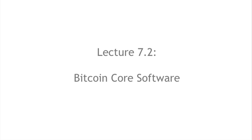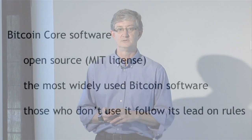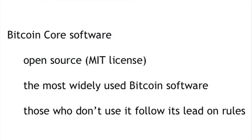In section 7.2, we'll talk about the Bitcoin core software. This is a piece of open source software, which is a focal point for discussion and debate about Bitcoin's rules. It's licensed under the MIT license, a very permissive open source license that allows the software to be used for almost any purpose as long as the source is attributed and the license is not stripped out. The Bitcoin core software comprises the most widely used Bitcoin software, and even those who don't use it tend to look to it to define what the rules are.